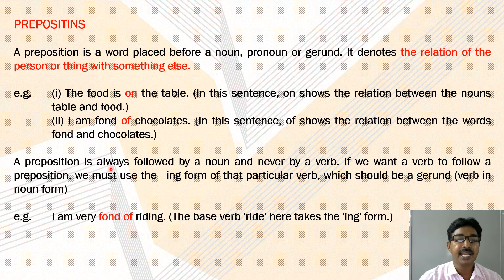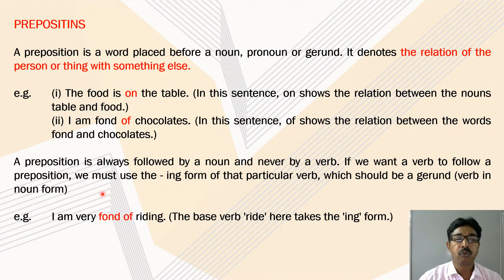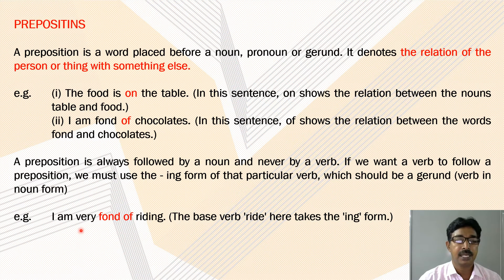A preposition is always followed by a noun and never by a verb. If we want a verb to follow a preposition, we must use the -ing form of that particular verb, which should be a gerund. Example: I am fond of riding.